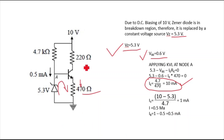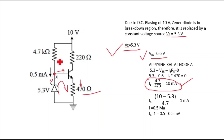Now we calculate IX, the current through the feedback resistor. The potential at the Zener node is 5.3 V, so IX = (10 − 5.3) / 4.7 kΩ = 4.7 / 4700 = 1 mA.